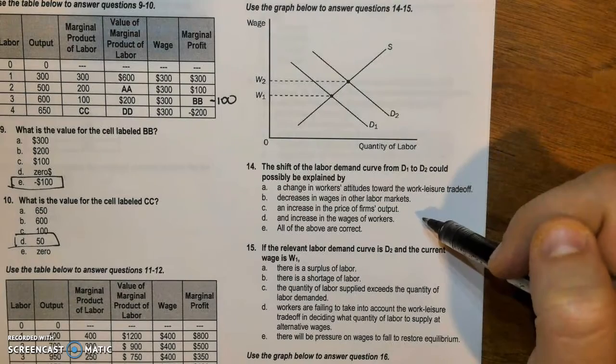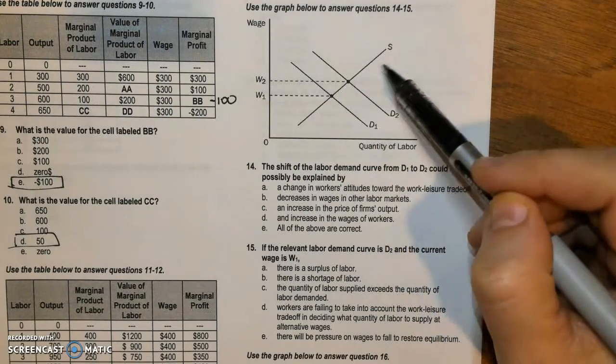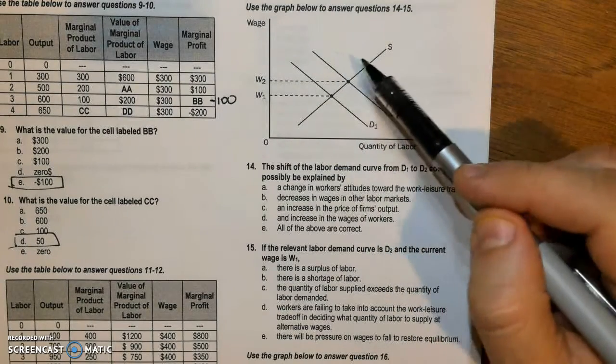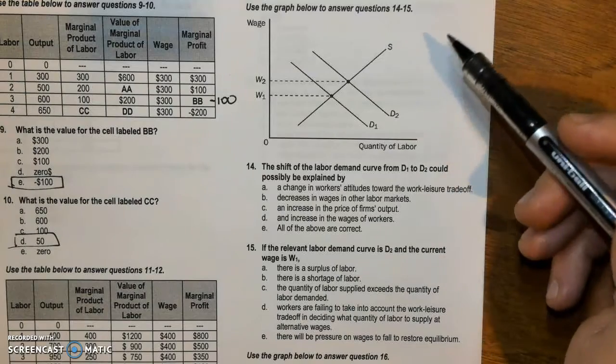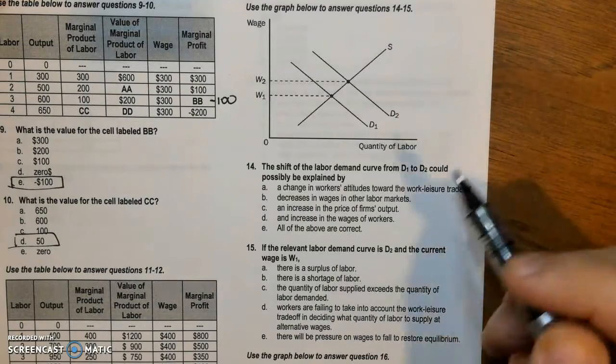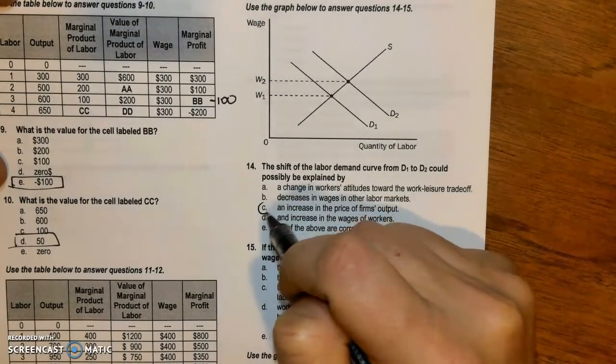An increase in the wages of workers, that would be the outcome of a shift in demand. But wage raise is a result of a shift in demand, not the other way around. So as a result, the answer is C.